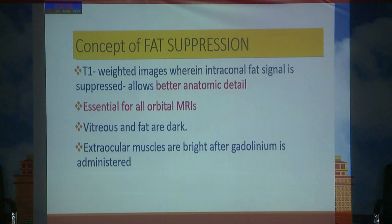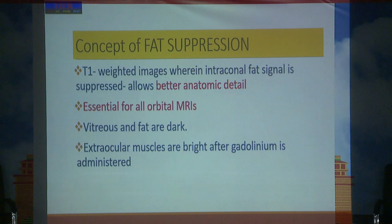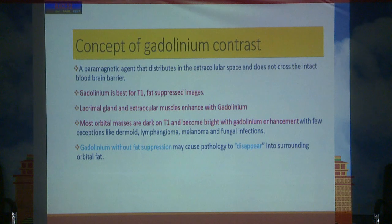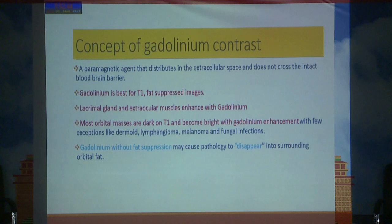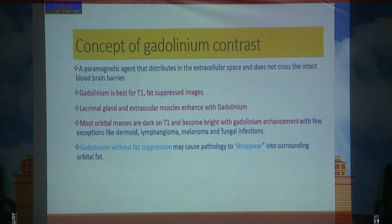The concept of fat suppression: in T1 weighted images the intraorbital fat signal is bright, so fat suppression allows for better anatomical detail of the lesion and is essential for all orbital MRIs. We also need to order gadolinium contrast because most orbital masses are dark on T1 and will become bright with gadolinium enhancement. Contrast enhancement without fat suppression can cause the pathology to disappear, so we must always request contrast enhancement with fat suppression.